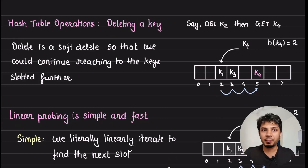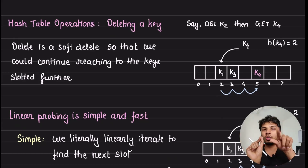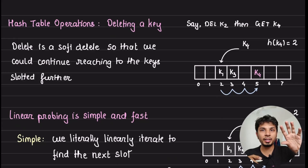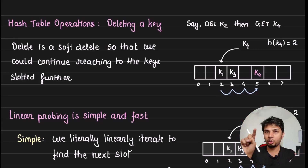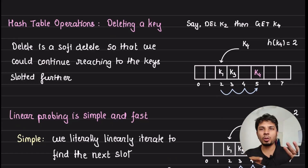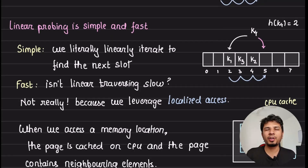Deleting a key must be a soft delete. If we do a hard delete, it creates an empty slot that would incorrectly terminate future lookups for keys that collided at the same index. So when deleting, we start from the hash index, move forward to locate the key, and soft-delete it, so that iterations can continue past that slot during subsequent lookups.